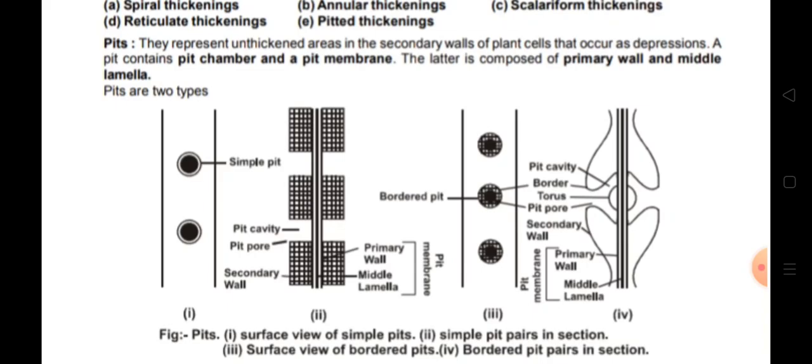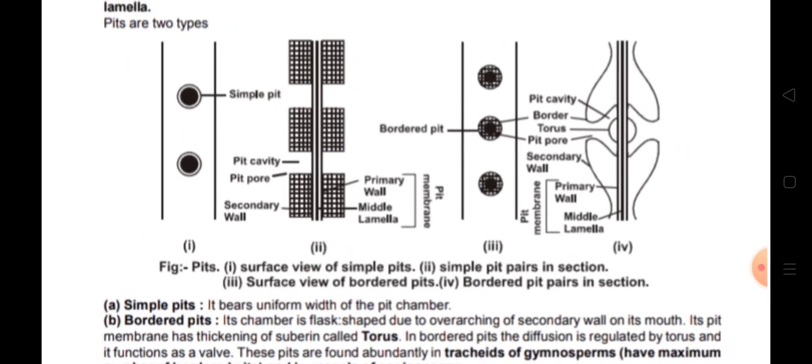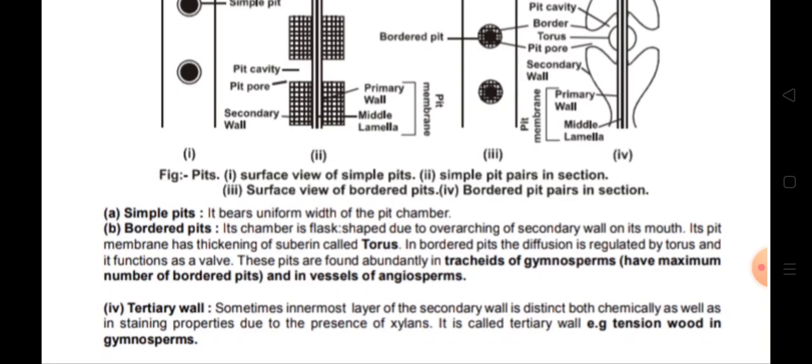Simple pits bear a uniform width of the pit chamber. In bordered pits, the chamber is flask-shaped due to the overreaching of the secondary wall over its mouth. The pit membrane of bordered pits has a thickening of suberin called the torus. In bordered pits, diffusion is regulated by the torus, which functions as a valve, allowing entry and exit of substances.